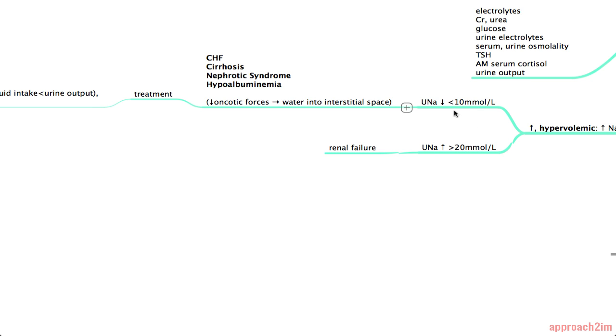If your urine sodium is low, which is less than 10, the conditions on your differential should be CHF, cirrhosis, nephrotic syndrome and hypoalbuminemia. The problem here is that you have a decreased oncotic force that leads to water being forced into the interstitial space where the sodium content is high.